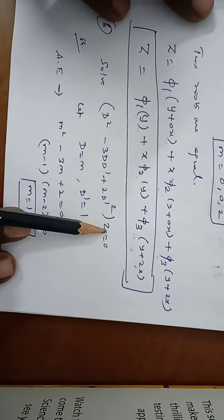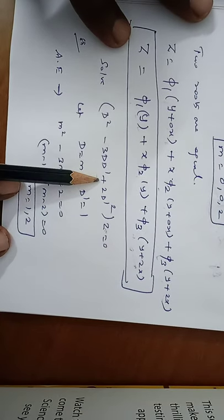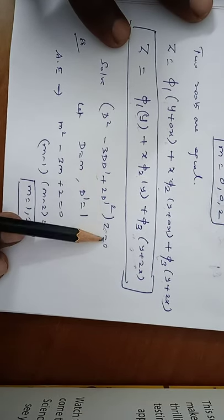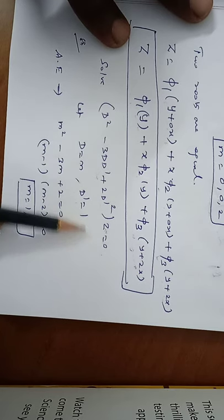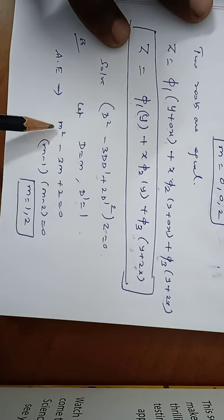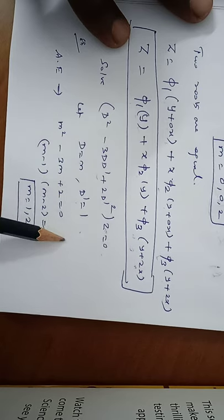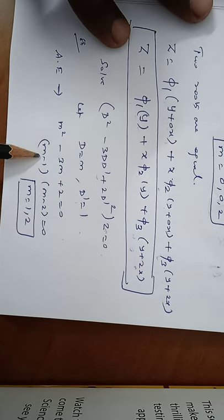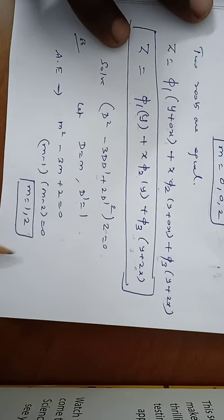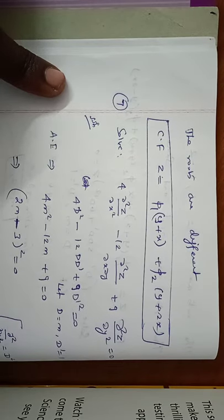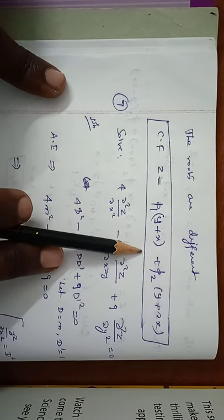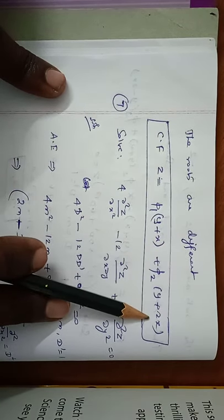Problem 6: solve (D² - 3DD' + 2D'²)z = 0. Let D = m, D' = 1. The auxiliary equation is m² - 3m + 2 = 0, which factors as (m - 1)(m - 2) = 0, giving m = 1 and m = 2. The roots are different, so the complementary function is z = φ₁(y + x) + φ₂(y + 2x).